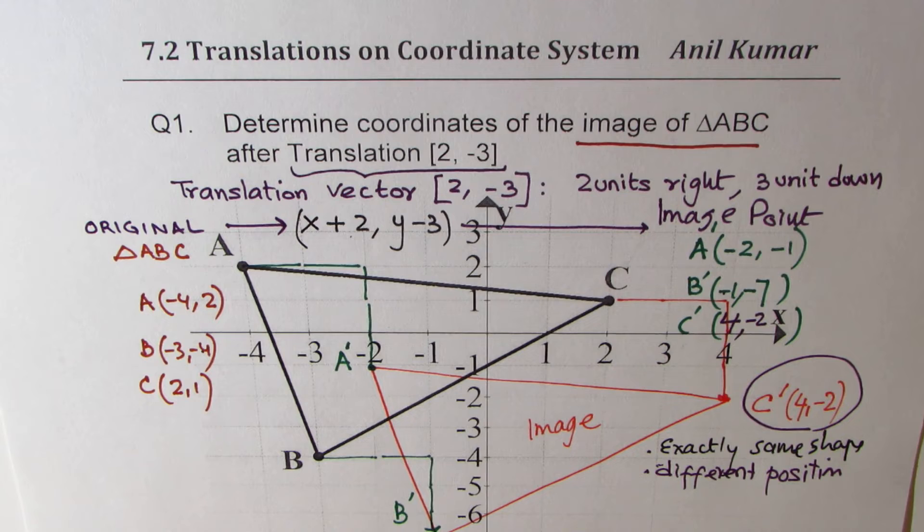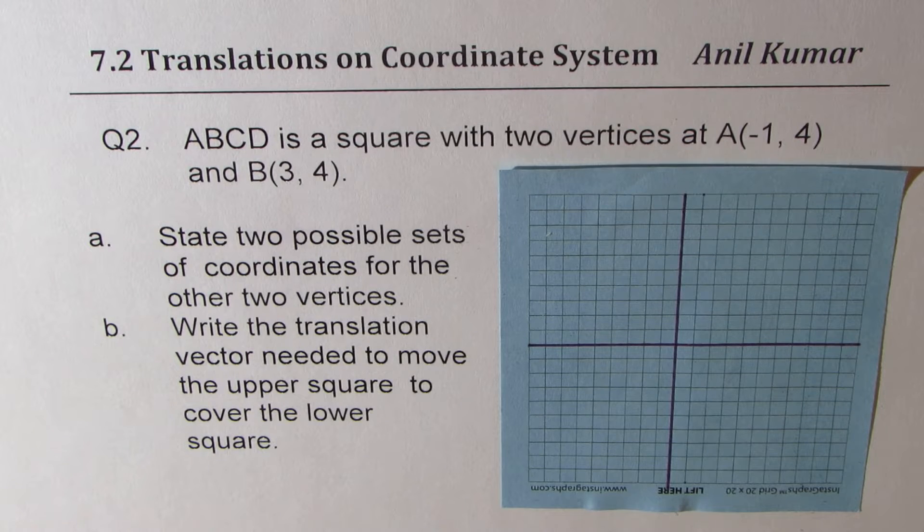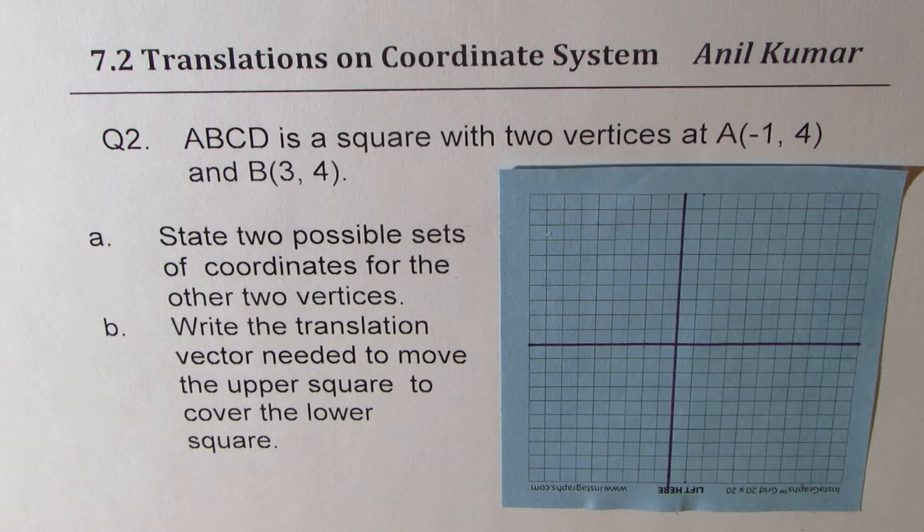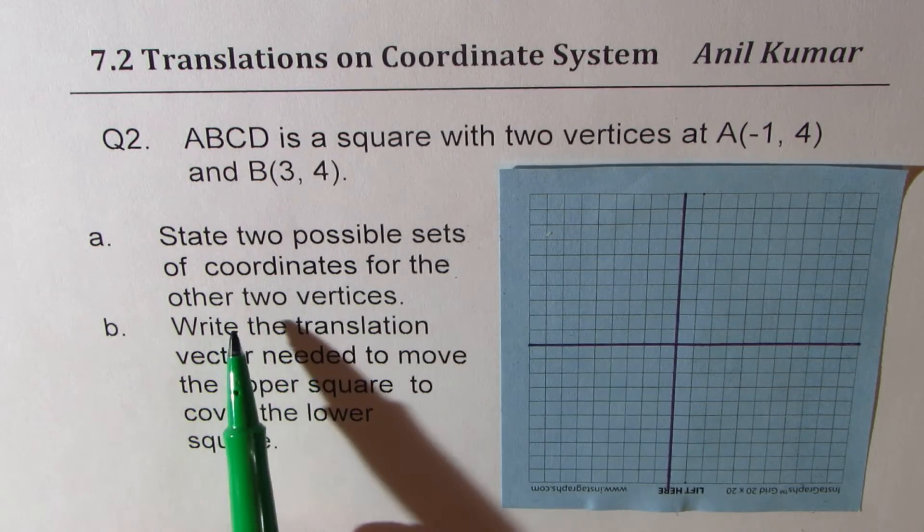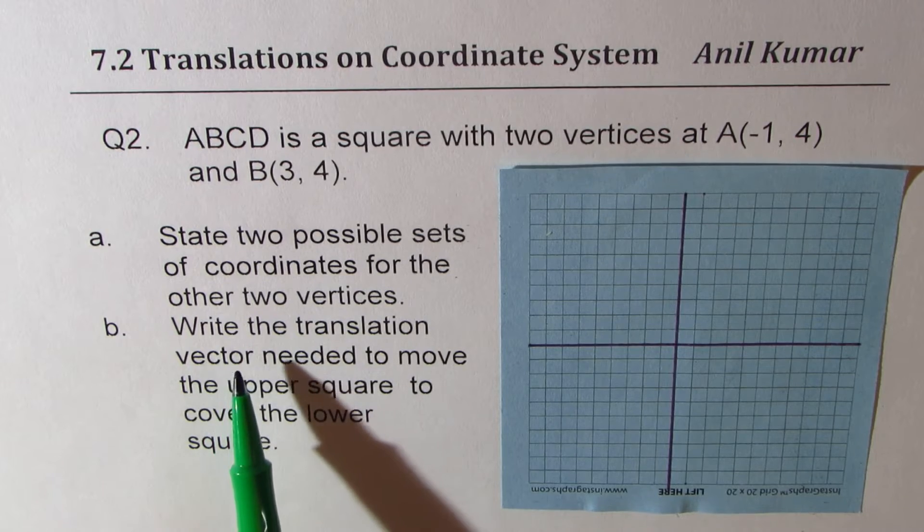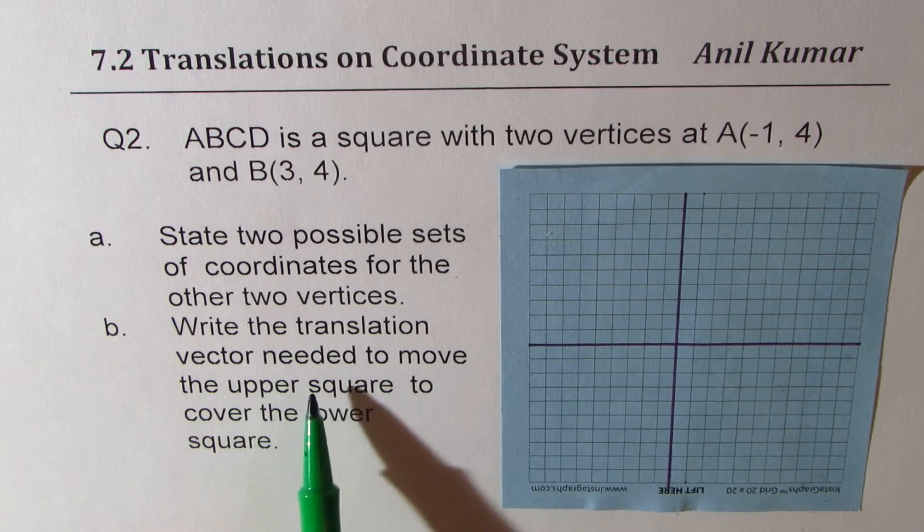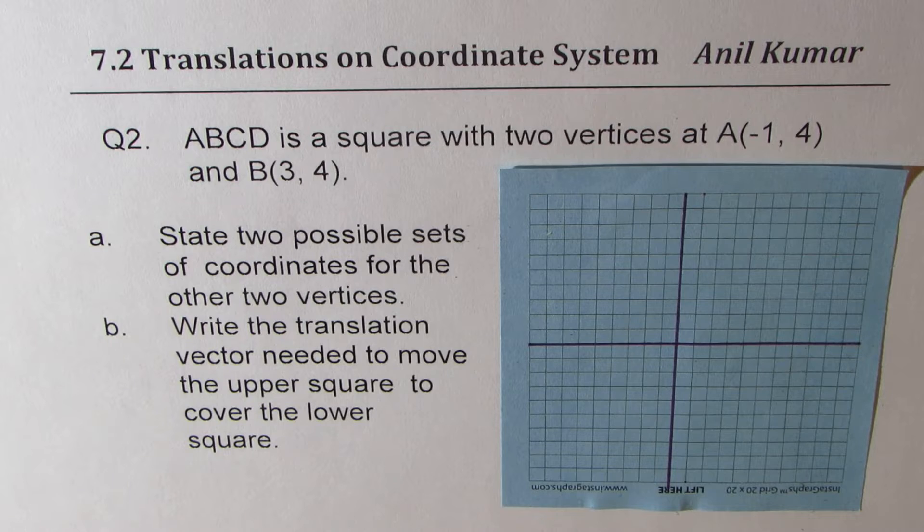Now, let's move on to question number two and understand few more concepts about translations. Question number two. ABCD is a square with two vertices at A(-1, 4) and B(3, 4). State two possible sets of coordinates for the other two vertices. B is write the translation vector needed to move the upper square to cover the lower square. You can pause the video, answer, and then look into my suggestions.